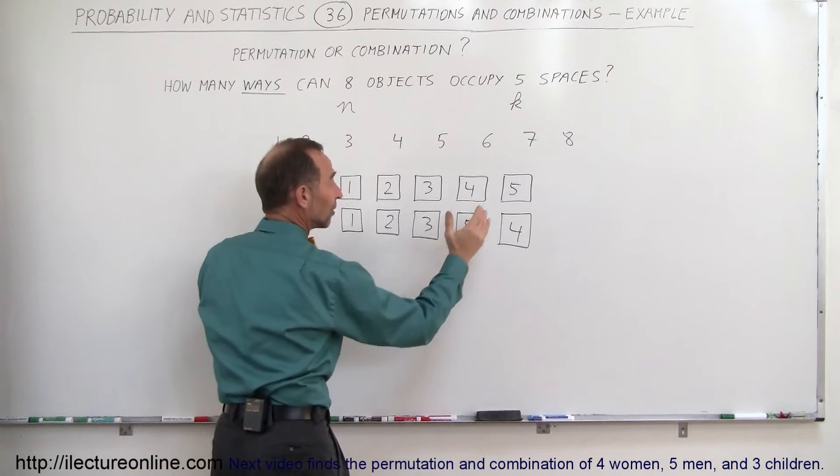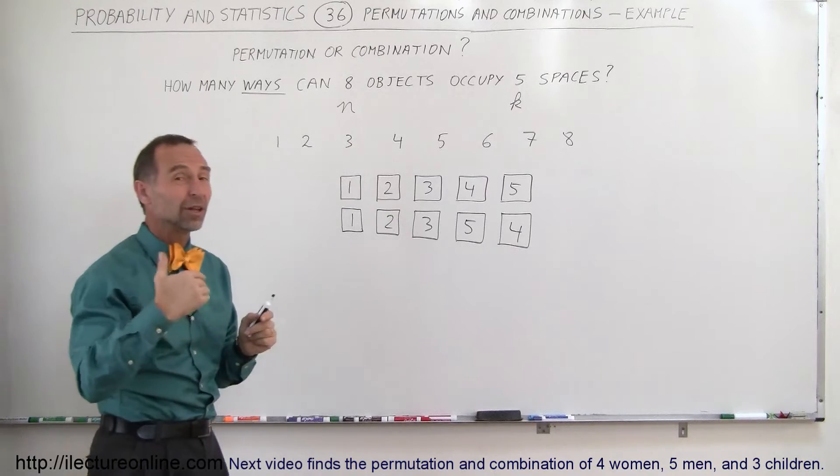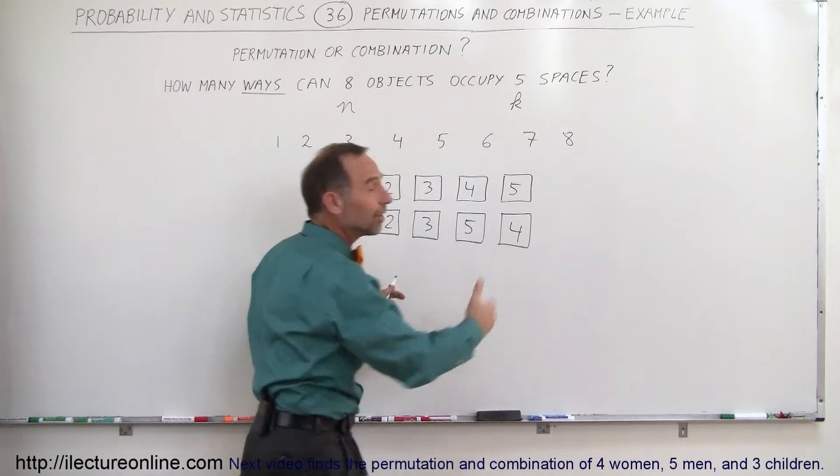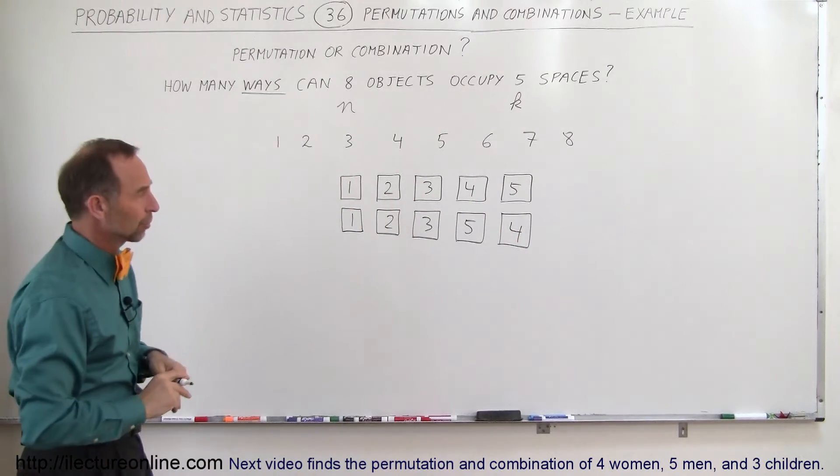You can imagine when you start shuffling things around with the same 5 numbers, you can come up with a lot of different permutations. Then you replace the 5 with a 6 and do it all over again, so the number will be very high when it comes to permutations.